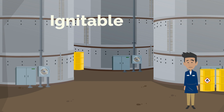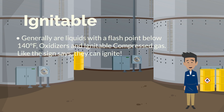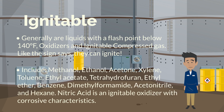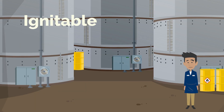Ignitable. These chemicals generally are liquids with a flashpoint below 140 degrees Fahrenheit, oxidizers, and ignitable compressed gas. Like the sign says, they can ignite. Some common examples include methanol, ethanol, acetone, and others. Nitric acid is an ignitable oxidizer with corrosive characteristics. Look for this GHS symbol.